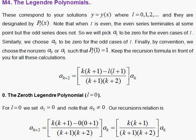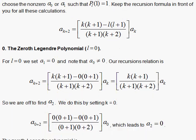You're going to see this in operation here. We're going to go here to find the 0th Legendre polynomial by picking l to be 0, and therefore we'll simply have k times k plus 1 up here. And we'll force a1 to be 0 because you're dealing with an even l.